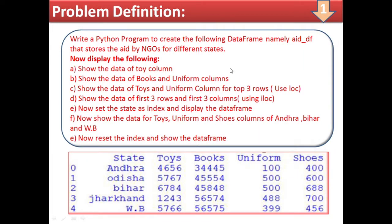Write a Python program to create the following DataFrame named add_df — that is the data added by NGOs for different states. We need to see what items different state NGOs donate, what facilities they provide. After creating this DataFrame, we have to perform some queries.